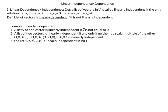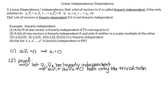Your book gives a list of examples of linearly independent vectors. First: a list of one vector v is linearly independent if v ≠ 0, because a1·v1 = 0 with v1 ≠ 0 forces a1 = 0 — only the trivial solution. Second: a list of two vectors is linearly independent if and only if neither is a scalar multiple of the other. This is an 'if and only if' statement, so there are two directions to prove.